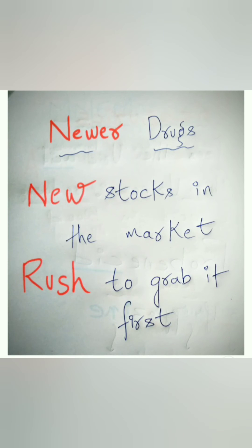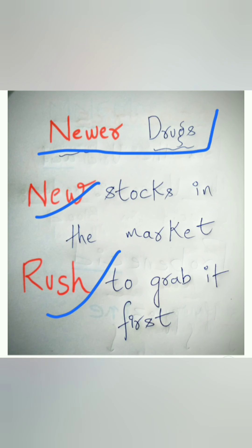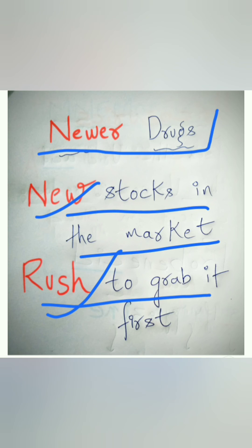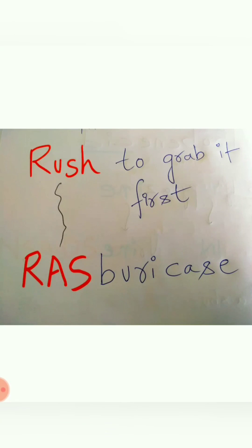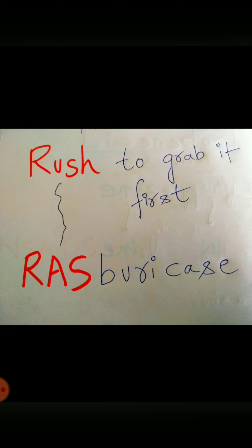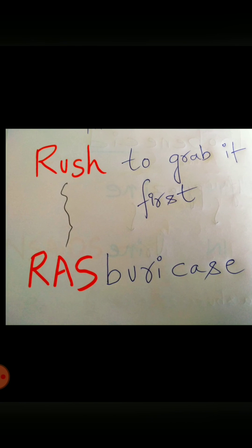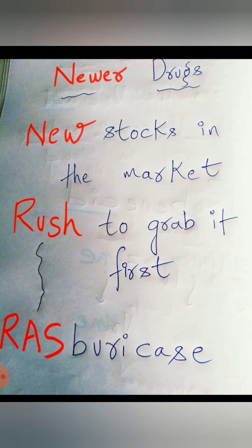How do you remember the newer drugs? Think of it this way: when there are new stocks in the market, you need to rush to grab them first. 'Rush' sounds like 'russ', and 'russ' correlates with rasburicase. So for newer drugs: new stocks in the market, rush to grab it first — rasburicase.